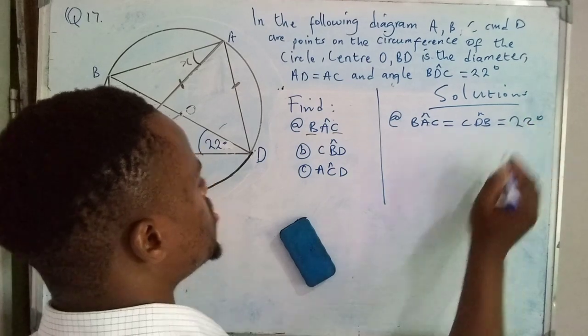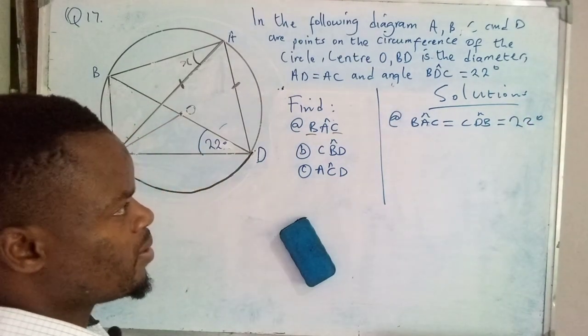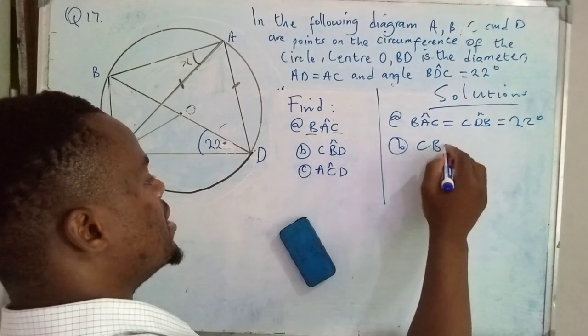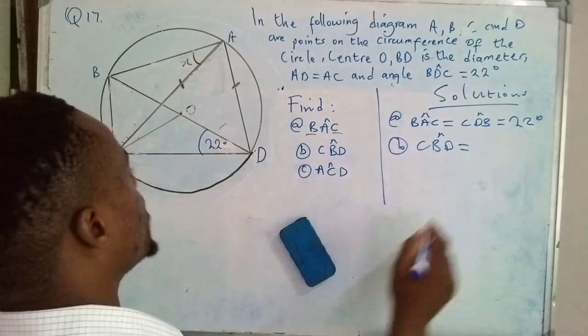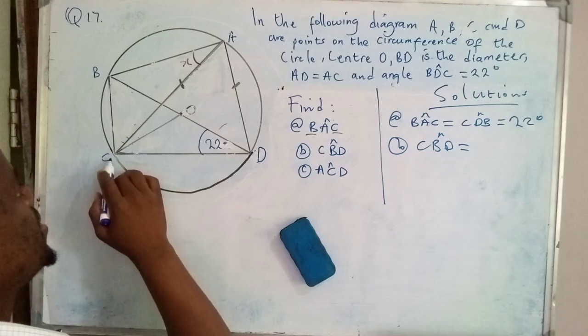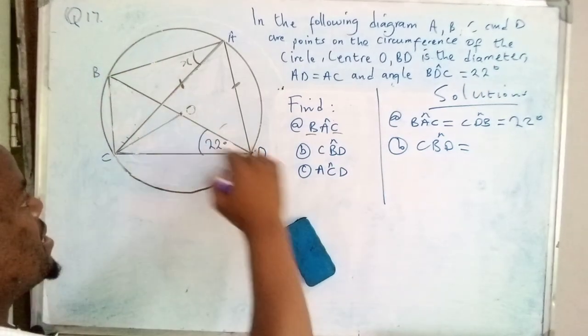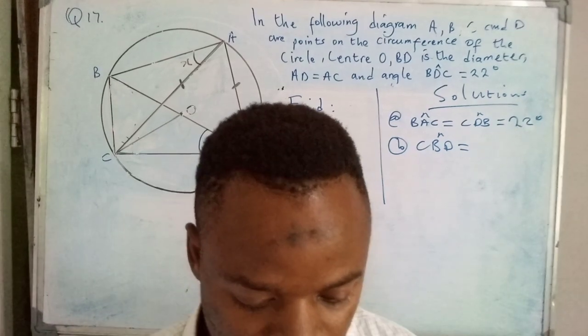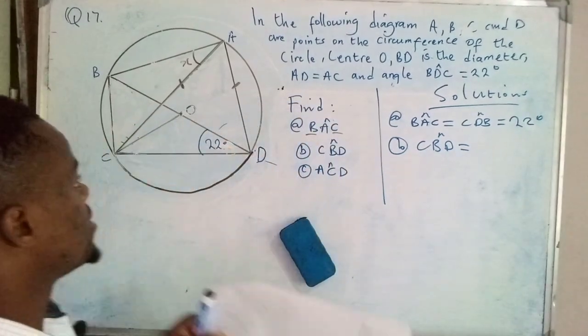What have I written? That should be 22 degrees. Alright, so we are done. Move on to B. CBD, which angle is that? Now I want you to see this one thing.